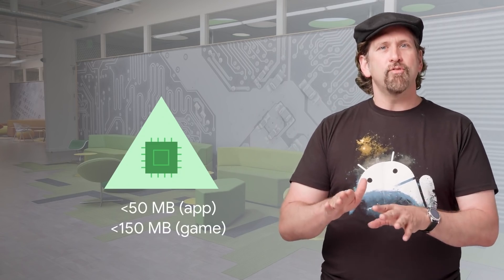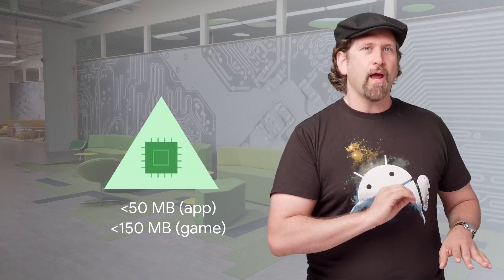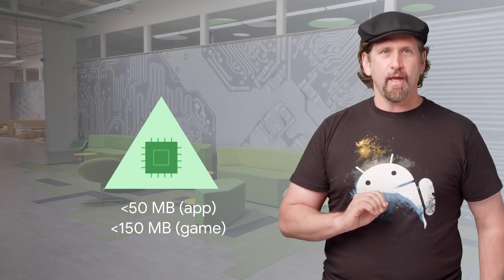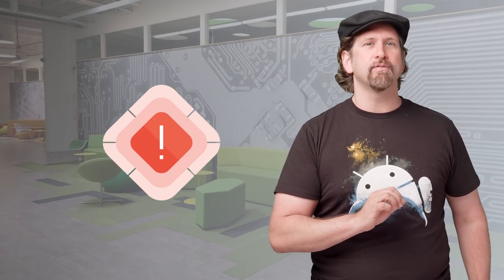Another thing to check is your app's proportional set size, or PSS. This is your app's physical memory footprint that accounts for both shared and unshared pages used by your app. You can easily check this using adb shell dumpsys meminfo. Aim for PSS RAM usage below 50 megabytes for apps and below 150 megabytes for games. And of course, make sure your app functions without ANRs and crashes by testing and double-checking on Android Go Edition-powered devices.